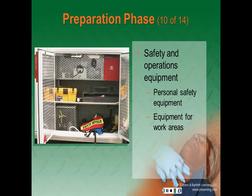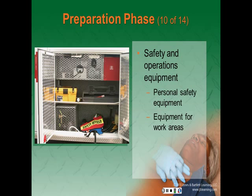Safety and operations equipment should include several kinds of equipment for responder safety, rescue operations, and local emergency scenes. Personal safety equipment includes PPE for exposure to blood or other body fluids, face shields, gowns, shoe covers and caps, turnout gear, helmets with face shields or safety goggles, and safety shoes or boots. There should be no hazmat gear, as this is reserved for hazmat technicians and response teams.